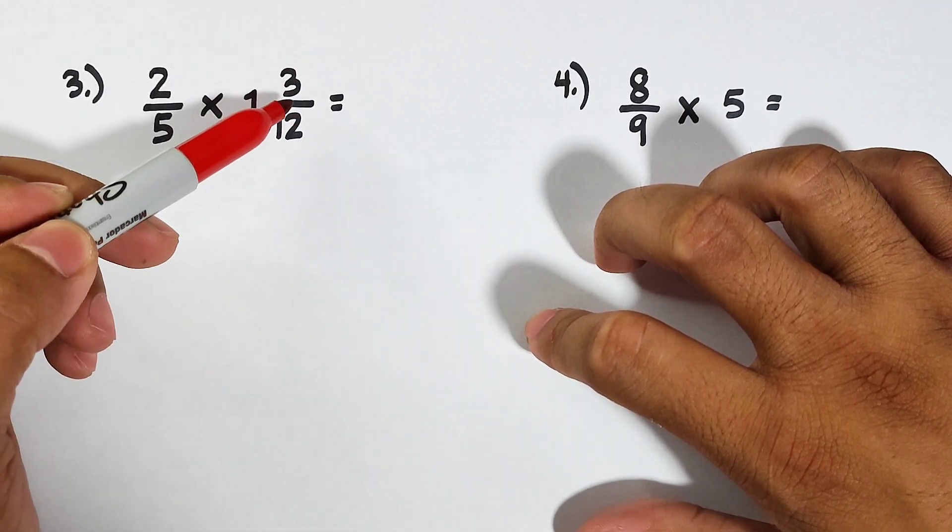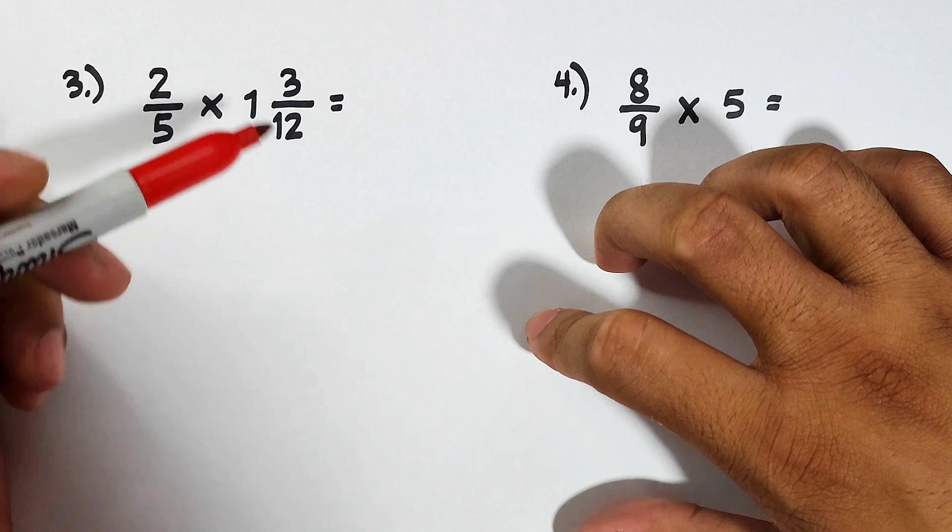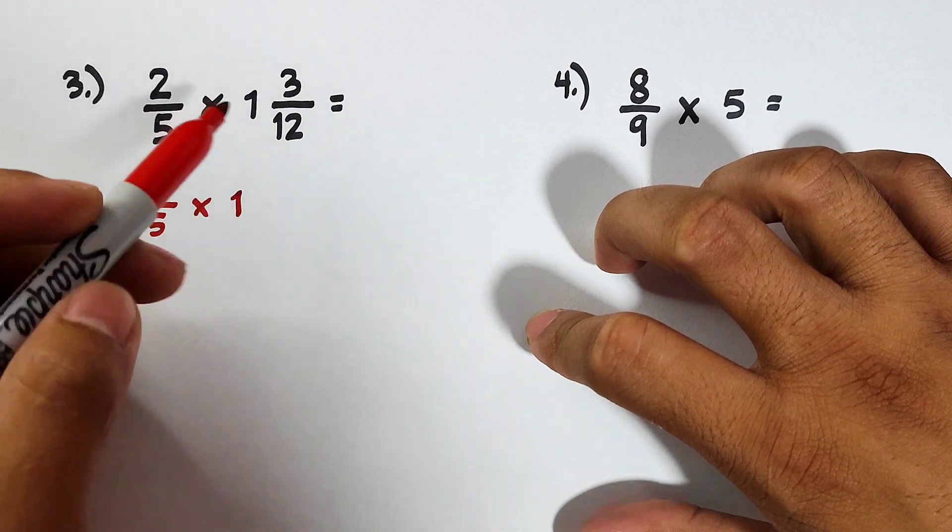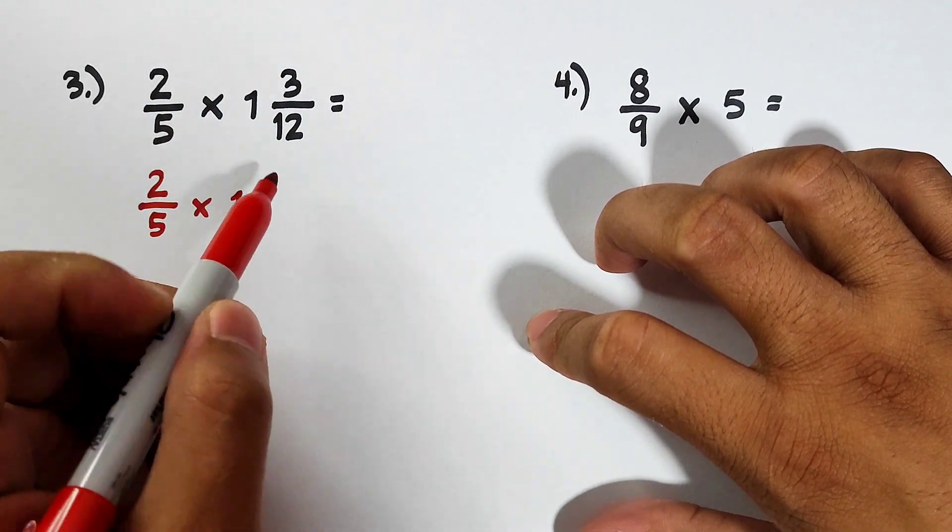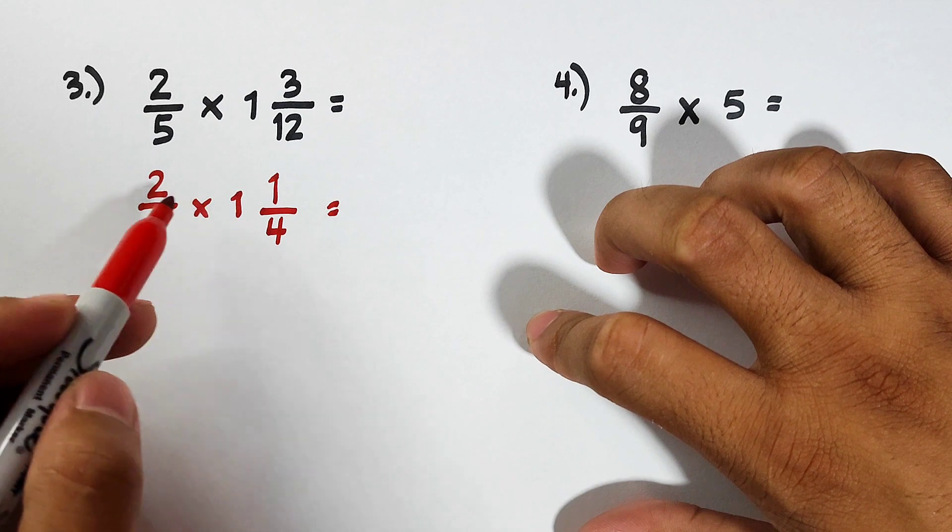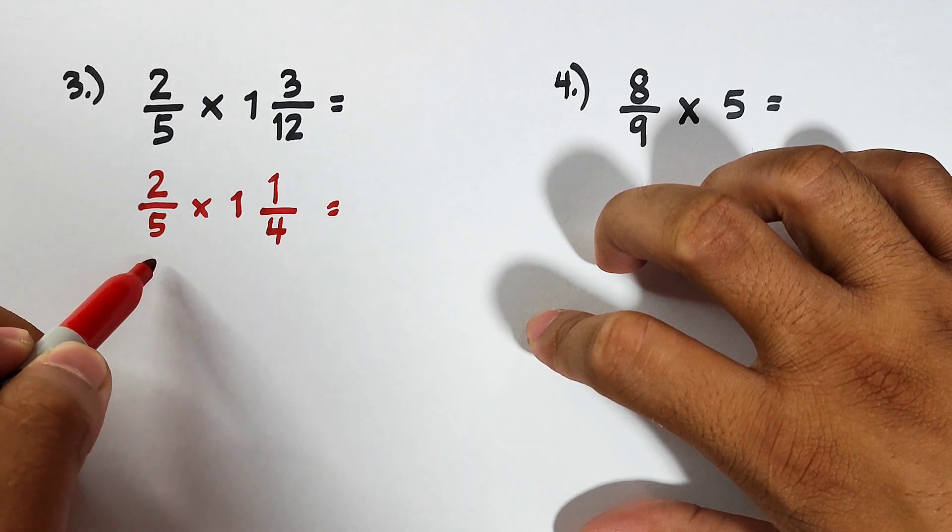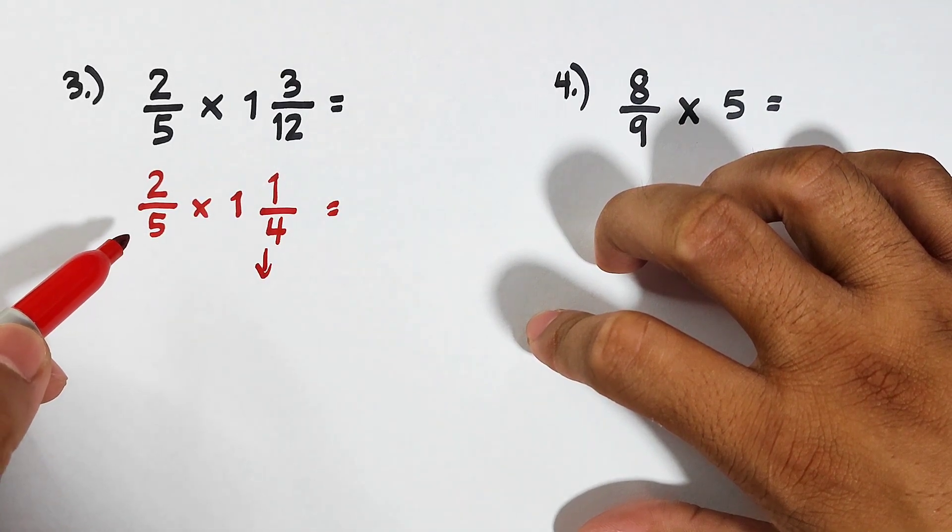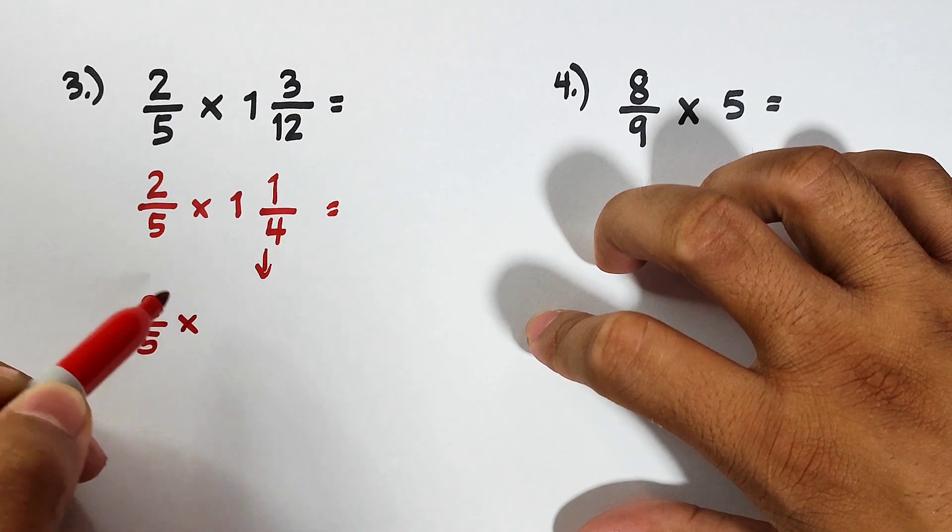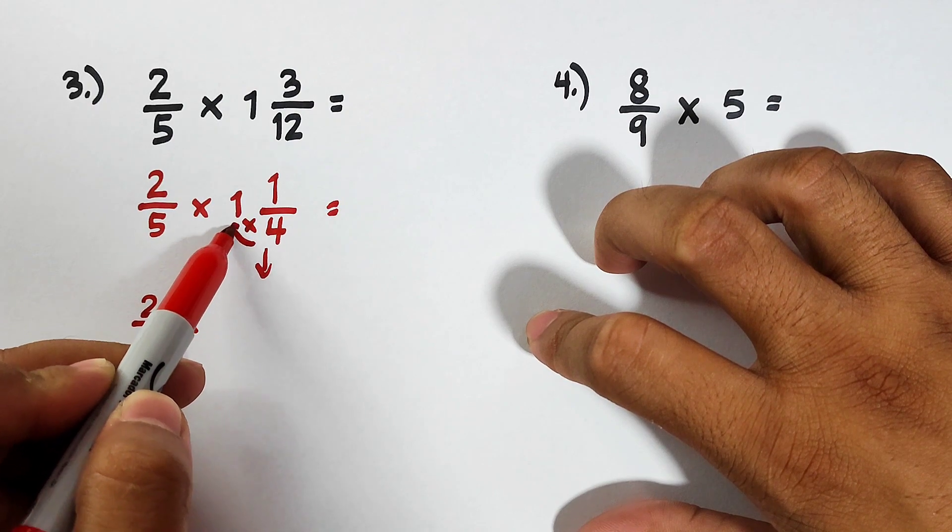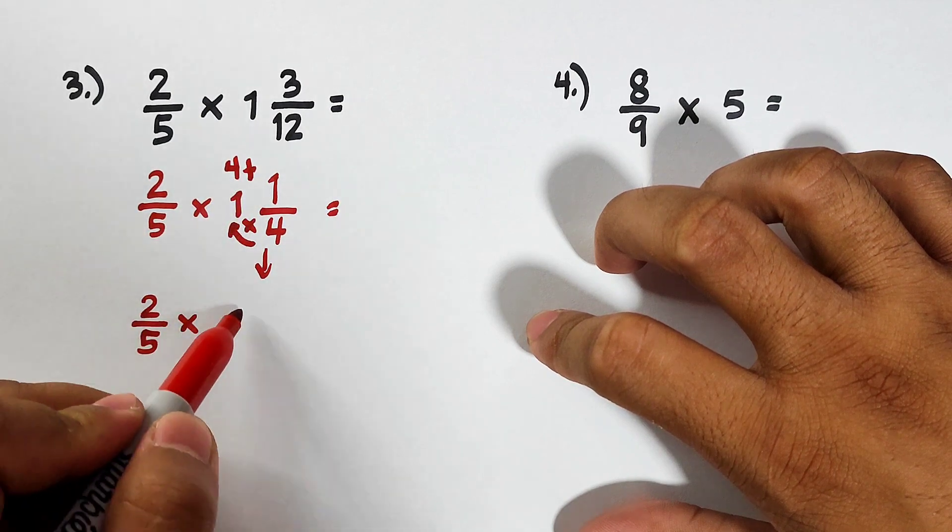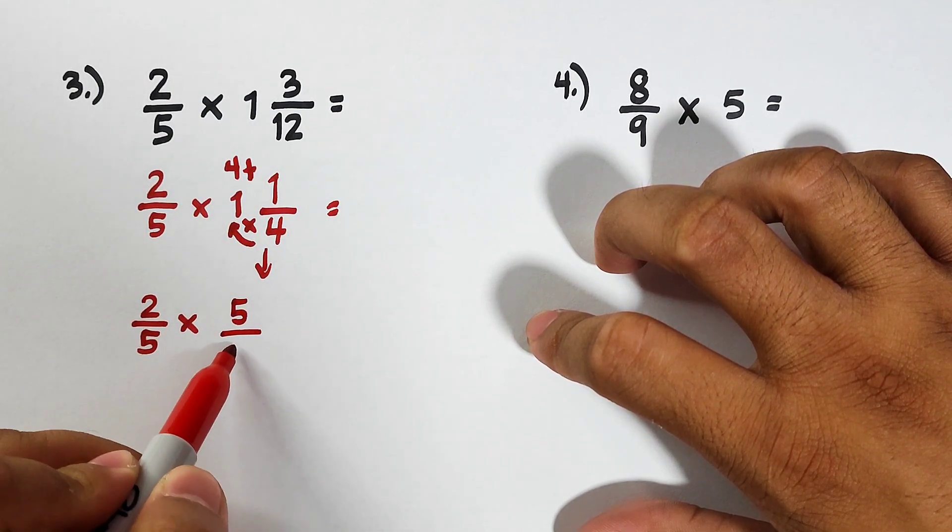So before multiplying it, because it will give you a big number, what we have here is 2/5 times 1 and 1/4. So before you multiply, we need to convert this 1 and 1/4 into an improper fraction. So copy 2/5, then times 4 times 1, that is equal to 4 plus 1 is equal to 5 over 4.